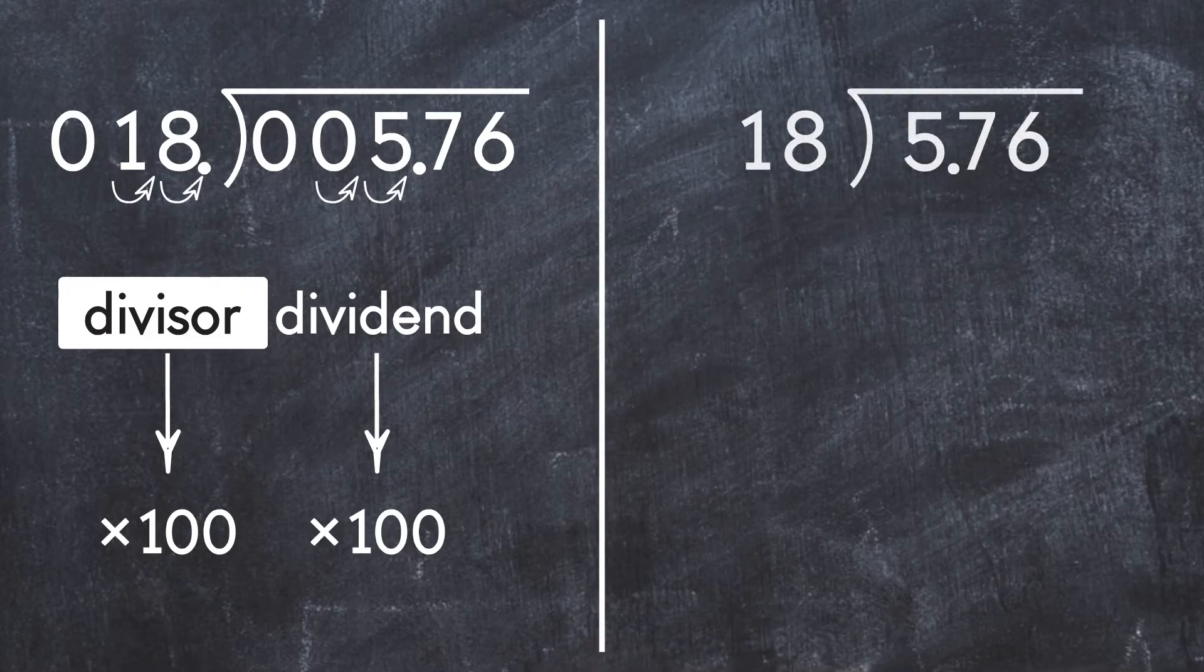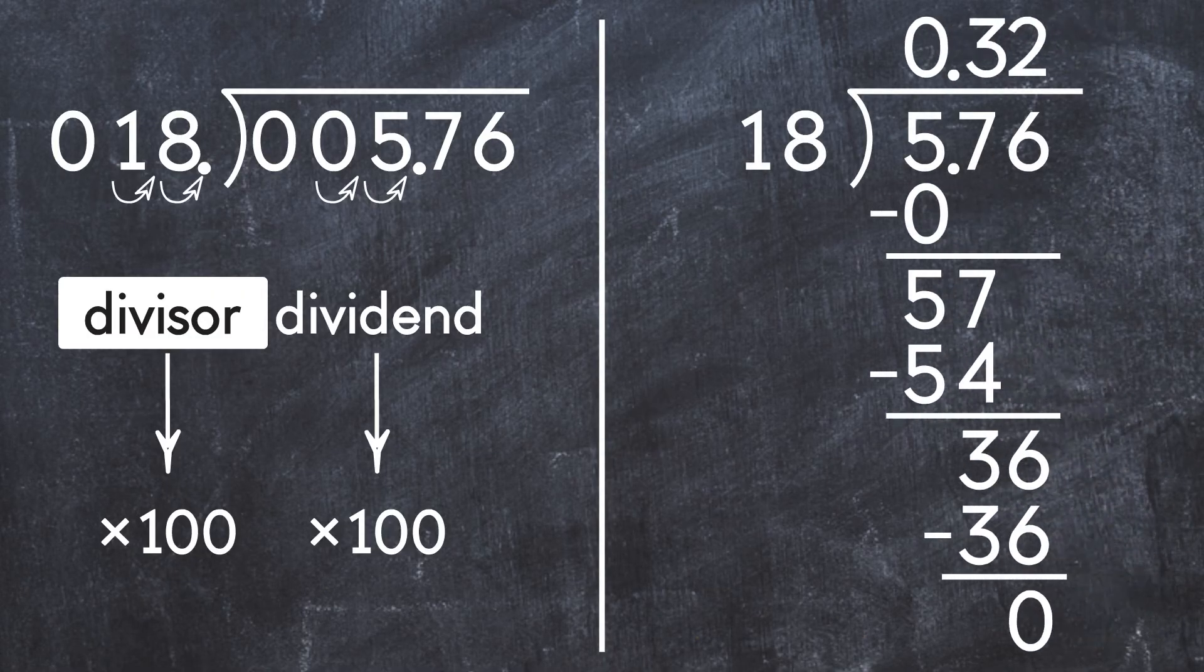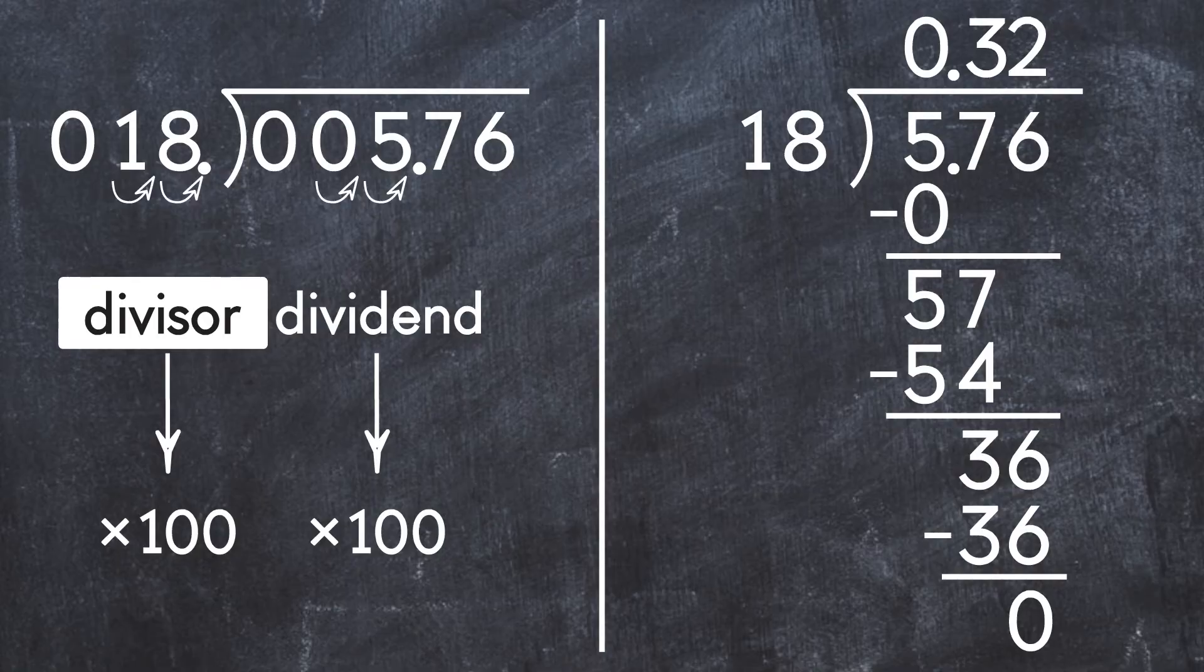When we solve using long division, we get 0.32. So 0.0576 divided by 0.18 equals 0.32.